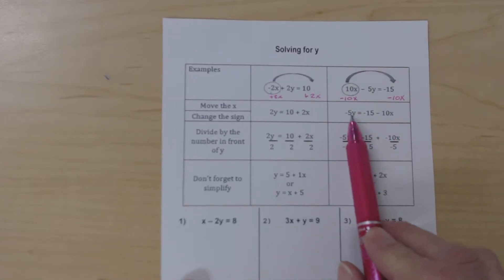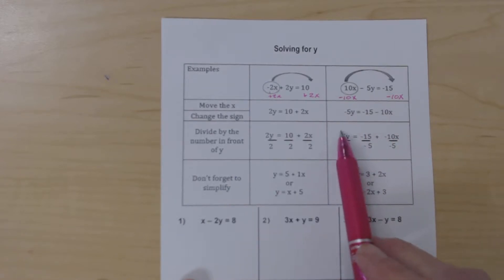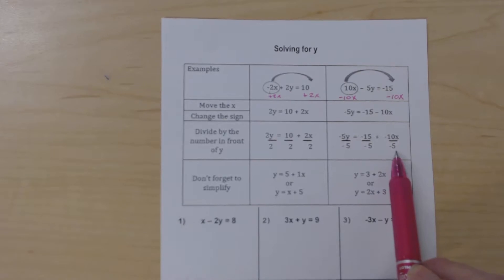Now I need to divide everything by the number in front of the y. The number in front of the y is negative 5, so every single term gets a negative 5. And then, don't forget, we've got to simplify.